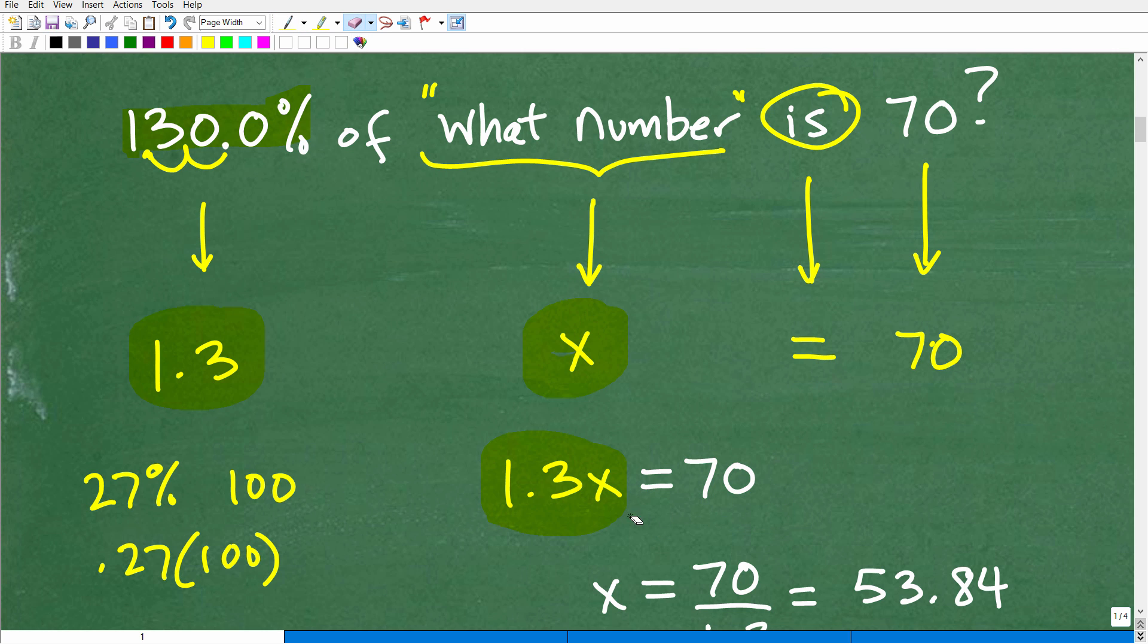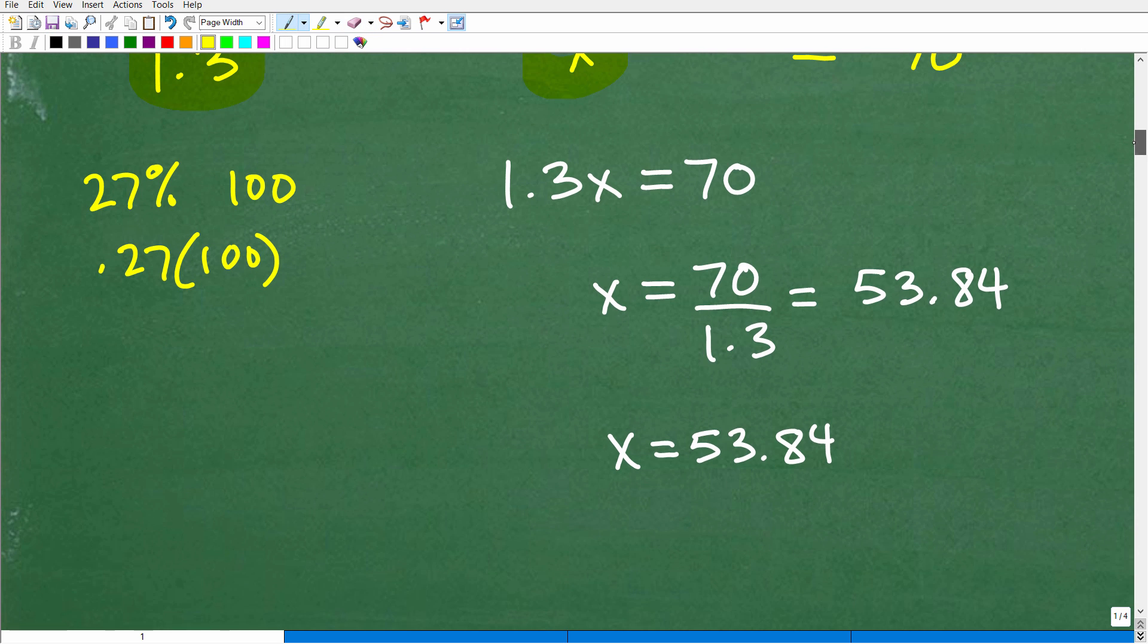Very, very simple. So 1.3x is equal to 70. How do I solve for x? Well, you need to divide both sides of the equation by 1.3. So 70 divided by 1.3, get your calculator out, you're going to get 53.84. Now, I am rounding off. There are more digits here, so this is an approximation. So technically, this is not a perfect answer, so I'm kind of rounding off here the two decimal points. So our number is approximately 53.84. Okay, so that is the answer, all right?